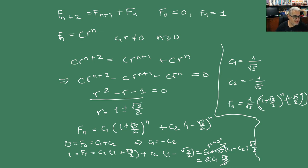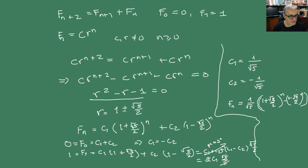Así tenemos nuestro enésimo número de Fibonacci escrito como: Fₙ = (1/√5) · [(1+√5)/2]ⁿ − (1/√5) · [(1−√5)/2]ⁿ. Ahí está el análisis de la recursión que genera la conocida sucesión de Fibonacci.